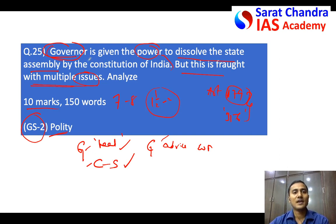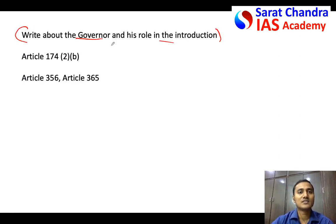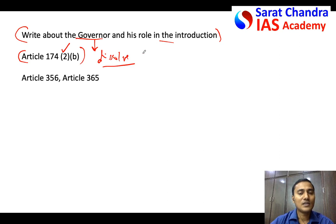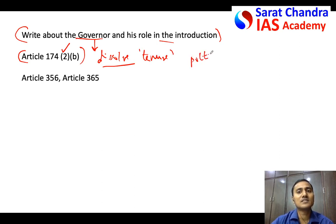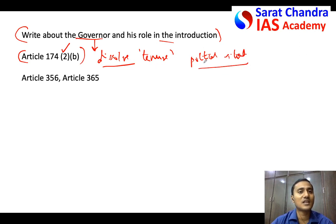Then come to analyzing the statement. You can say that Article 174(2) of the Constitution of India gives the Governor the power to dissolve the state legislative assembly — one, when the tenure of the legislative assembly of five years is over, and second, based on the political situation. However, the Constitution clearly does not mention the specific conditions for dissolving.